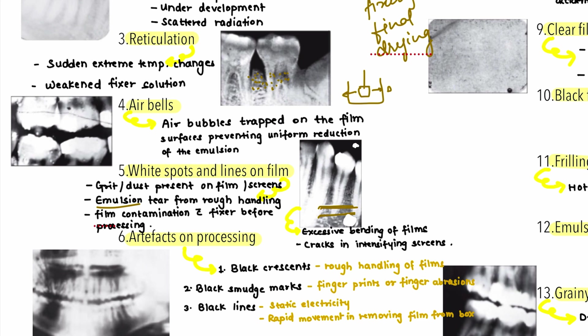Emulsion tear can be prevented by not rubbing the film against the tank or film hangers. White spots and lines can also result from film being contaminated with fixer before processing — keep the dark room clean and dry at all times. Other causes include excessive bending of films, cracks on intensifying screens, contamination with fingers, or improper handling.